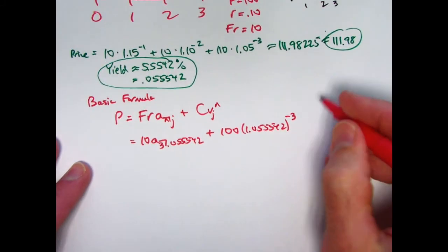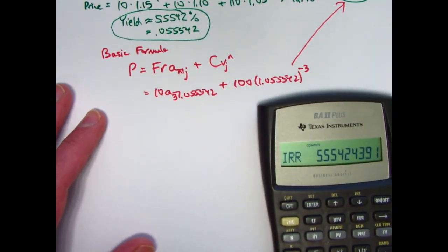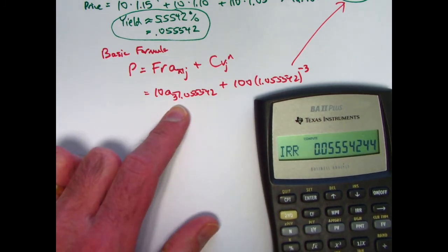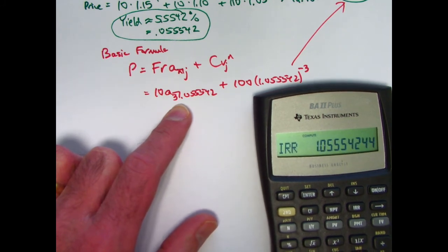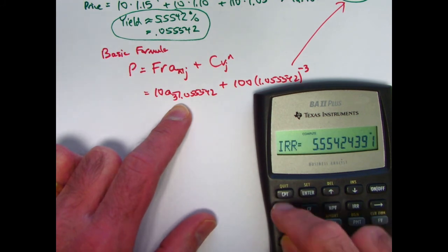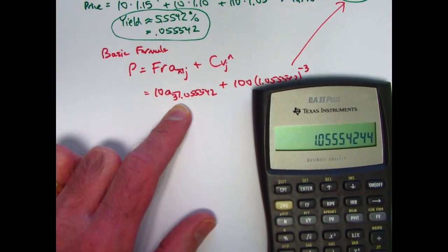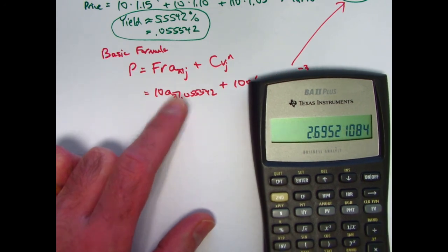So this should give us the same price. This should give us 111.98. Let's see if it does. So take this IRR, divide by 100 to get it in decimal form, compute this thing. So I'd have to, well, let me store this thing in register zero. I could do one added to that. Let me get rid of the IRR there. Quit out of that. There is the IRR as a decimal. Add 1 to that. Take its reciprocal to the third power. Subtract from 1. Divide by the IRR. A3 is about 2.6952 times 10. Store that in register 1.